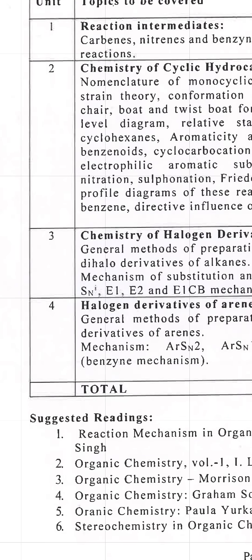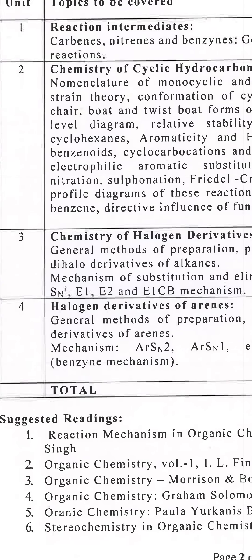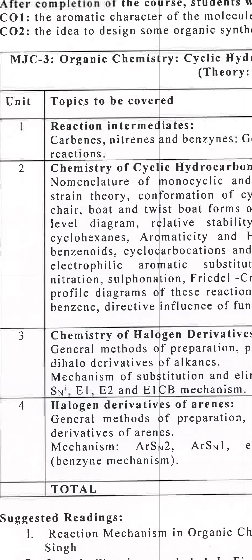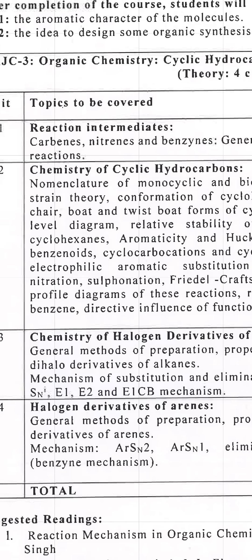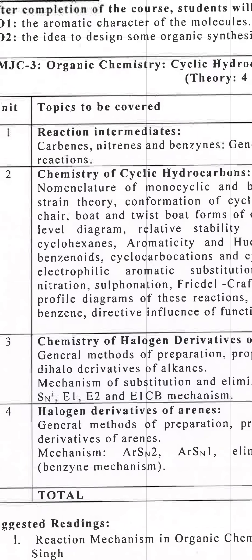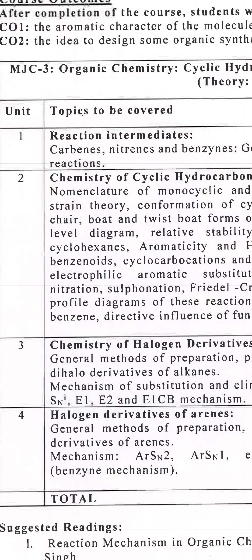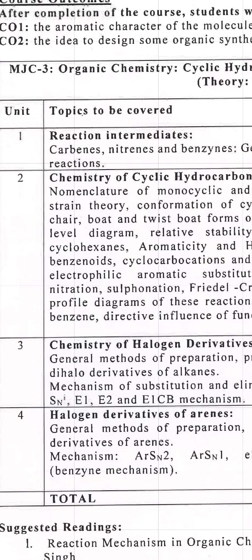The fourth topic is halogen derivatives of arenes. In Chapter 1, reaction intermediates: what you need to study includes carbocations, carbanions, and free radicals. The third type of intermediate is carbene — carbon-related — and benzyne.